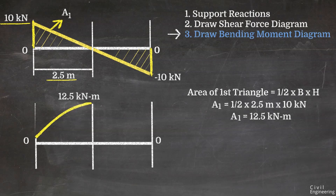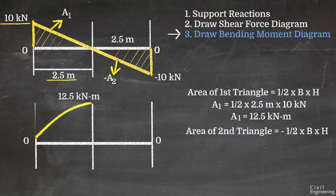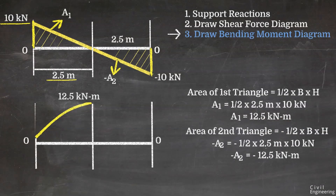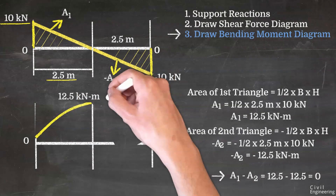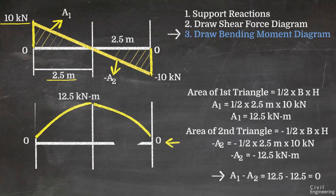For the other end of the beam, we find the area of the second triangle A2, which is in the negative direction. A2 also equals 12.5 kNm in magnitude. The bending moment at point B equals A1 minus A2 = 12.5 − 12.5 = 0. So the bending moment diagram returns to zero at the right support, completing the diagram.